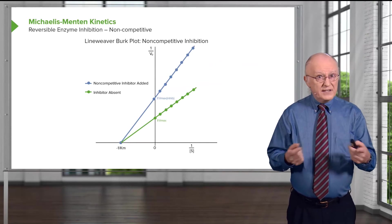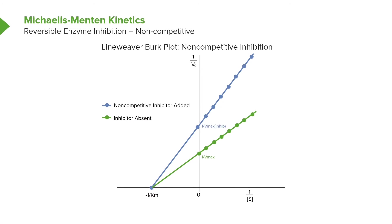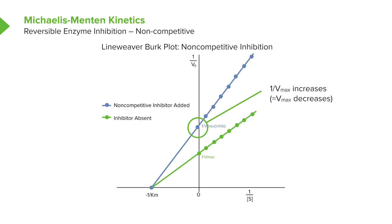On a Lineweaver-Burk plot we see something different than we saw with competitive inhibition, consistent with what I just described. In green again we see the linear plot for the uninhibited reaction. In blue we see the non-competitively inhibited reaction, and we notice that the two lines cross at −1/KM — consistent with the KM value not changing. However, the blue line has a higher slope than the green line, meaning it crosses the Y-axis at a higher point. That may seem counterintuitive — if we decrease VMAX, why is the Y-intercept higher? Remember we're doing a reciprocal: by decreasing VMAX, 1/VMAX actually increases.